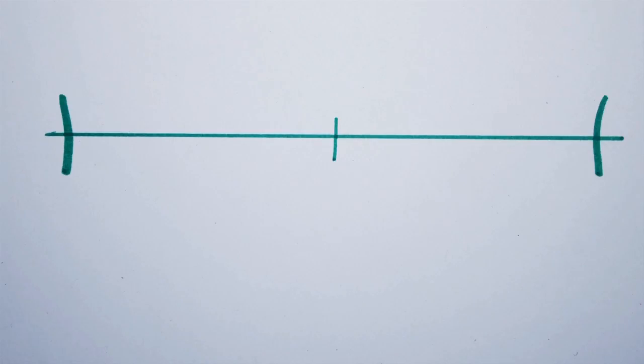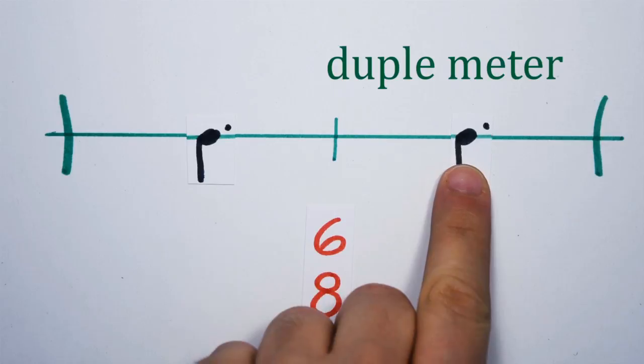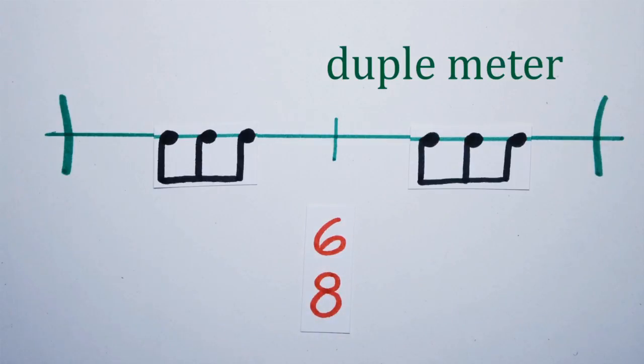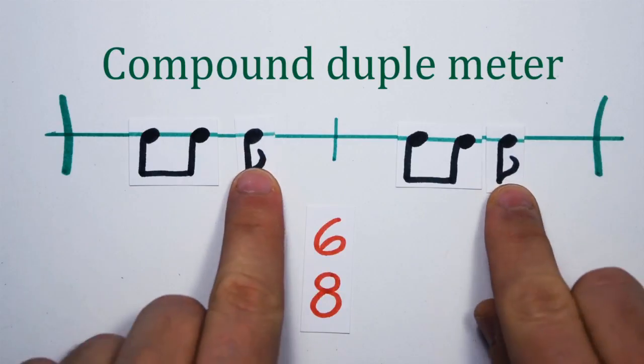Although the top number is a six, we still have to consider this as duple meter, since we still have two beats per measure. But since each beat gets three pulses, we call it compound duple meter, basically because we have the two pulses per beat from simple meter plus one extra pulse, all three compounded inside one beat.